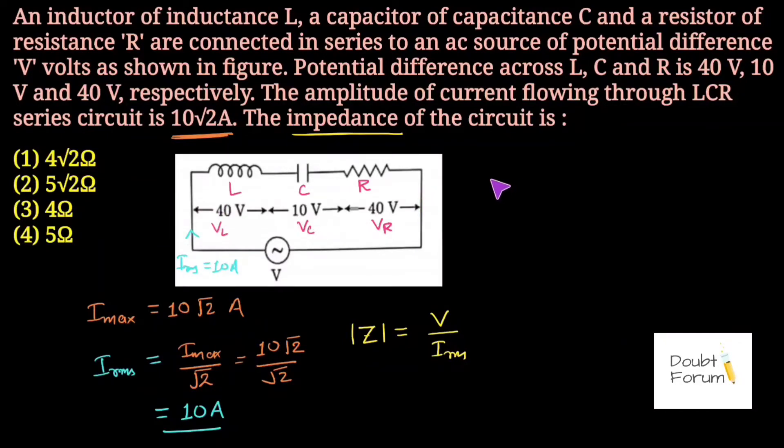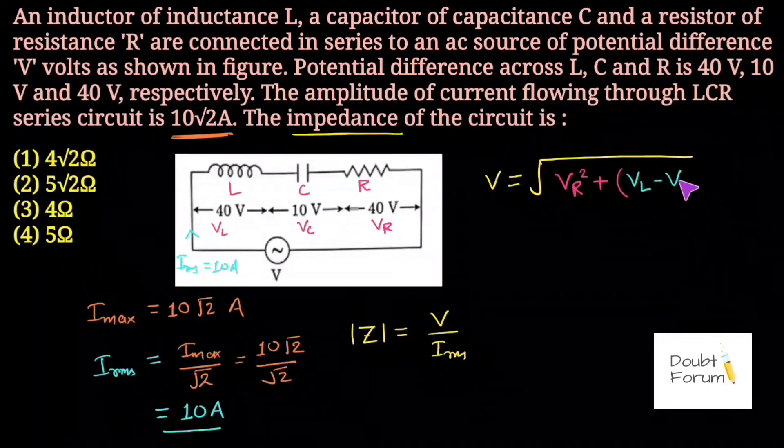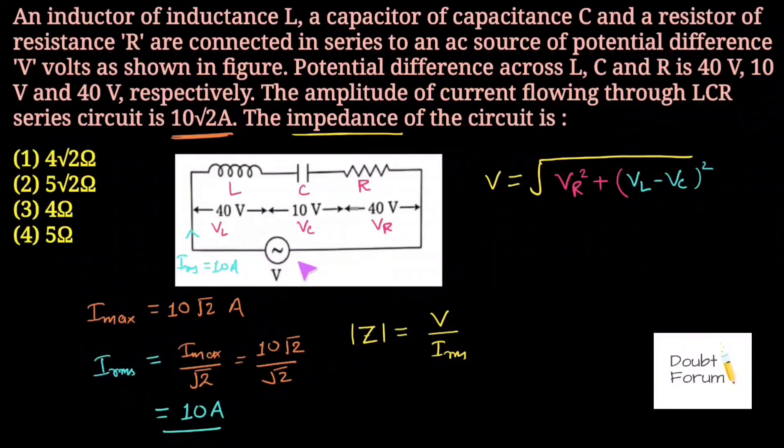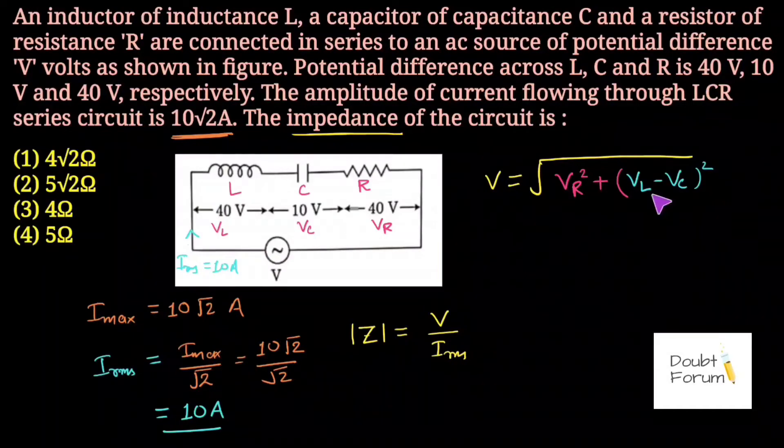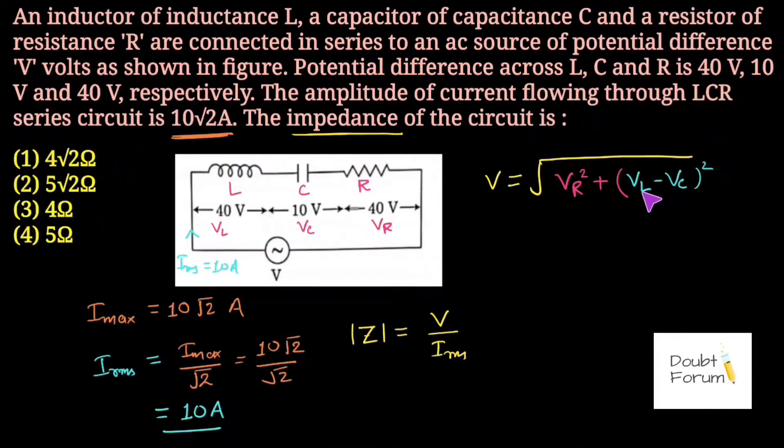The voltage V in any RLC circuit is given by the square root of VR² plus (VL - VC)². This is the formula for resultant voltage across any RLC circuit. We have taken VL minus VC because VL is greater than VC. If VC were greater than VL, we would use VC minus VL instead.